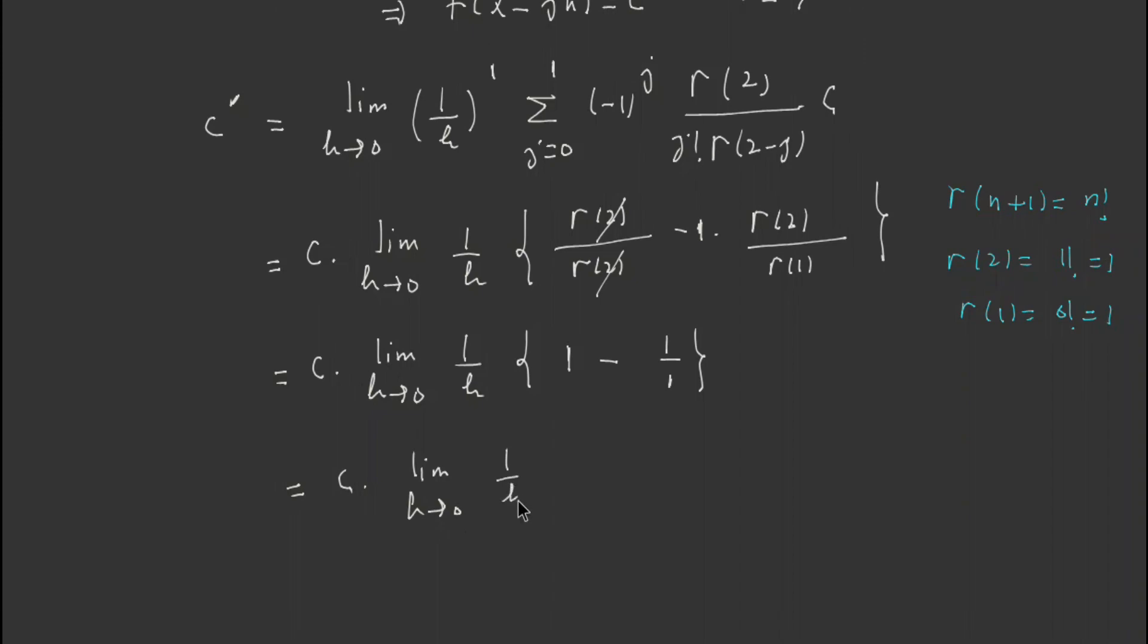And here it is c limit h tends to 0, 1 over h, it is 1 minus 1 which is 0, so everything is 0. This means first derivative of constant is 0, as it is true in classical calculus. This means this definition matches with the results of classical calculus.